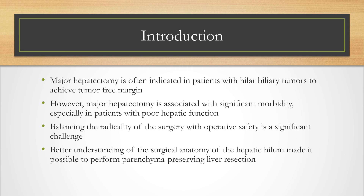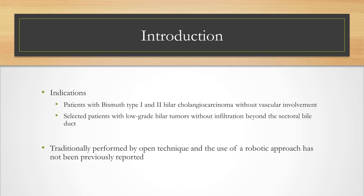Better understanding of the surgical anatomy of the hepatic hilum has made it possible to perform parenchyma-preserving liver resection. This procedure is indicated in patients with type 1 and 2 hilar cholangiocarcinoma without vascular involvement, and select patients with low-grade hilar biliary tumors without extension beyond the sectoral bile ducts. The use of a robotic approach to perform this complex procedure has not been previously reported.